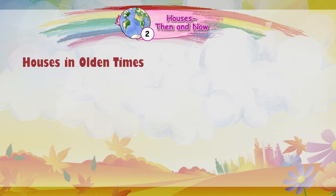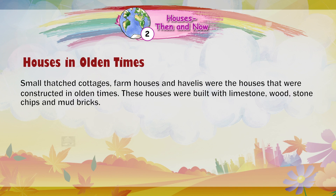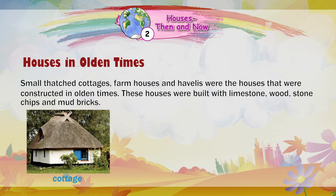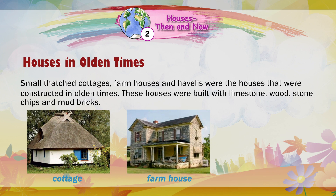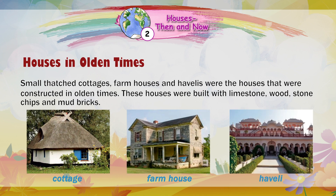Houses in olden times: small thatched cottages, farmhouses, and havelies were the houses constructed in olden times. These houses were built with limestone, wood, stone chips, and mud bricks.